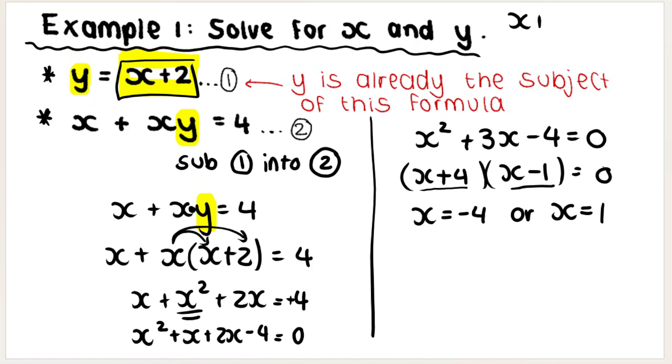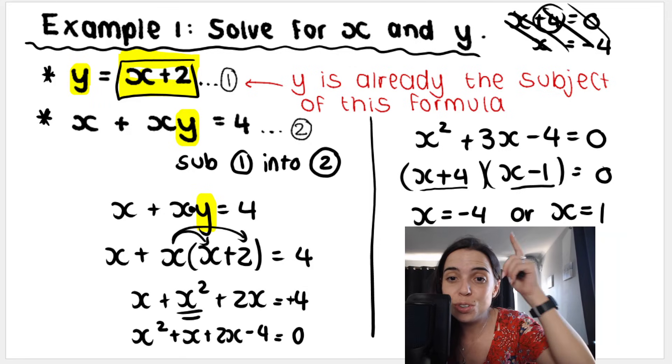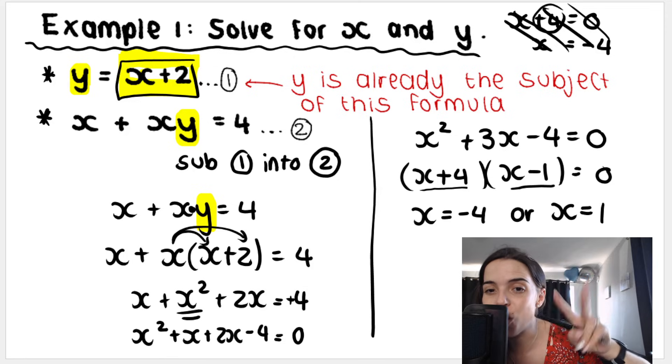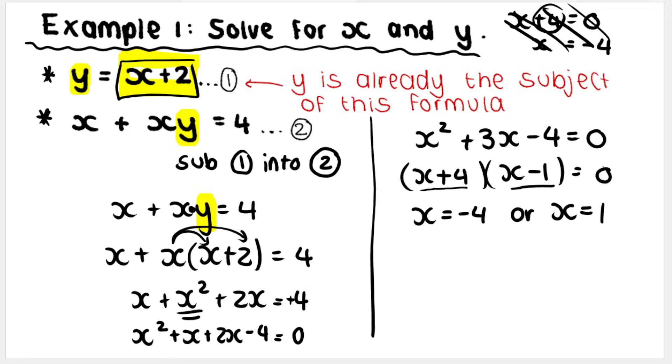So the step that you're not seeing is this, and then the inverse operation of plus 4 is minus 4. So I have two answers for X, two answers, which means I will then have two answers for Y. Now, once you found your answers for X, you will sub your X into either equation, but equation one would be the easiest one to sub it back into.